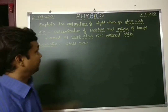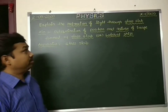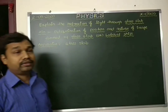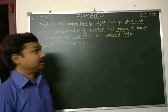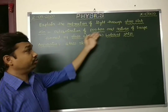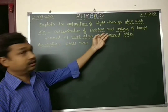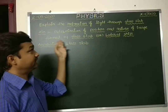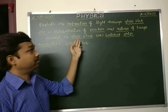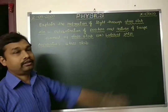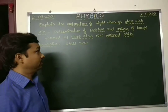Entering into our topic — what is the aim of this experiment? Our aim is to find and determine the position of the image and what is the nature of the image formed by a Glass Slab, or Lateral Shift.